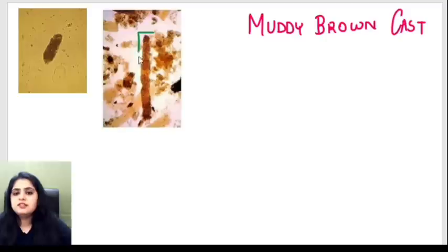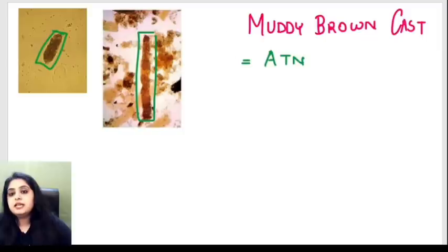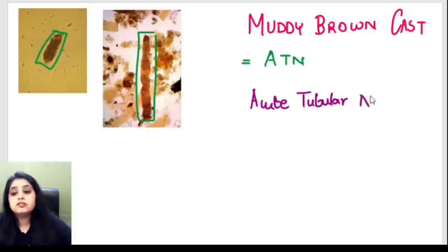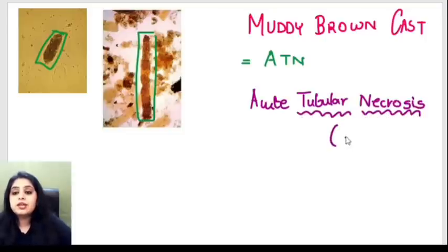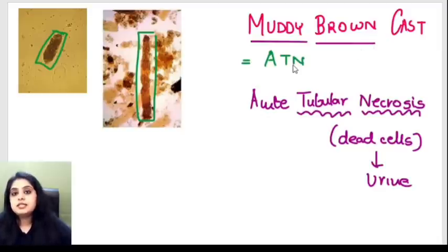This next cast is cylindrical but looks pretty brown and dirty, so we call it a muddy brown cast. If someone's urine shows muddy material, it means cells must have died. This is seen in acute tubular necrosis (ATN). In ATN, necrosis of tubular cells is occurring, so dead cells are coming out in the urine. Dead cells give a very dirty appearance — hence the muddy brown cast.